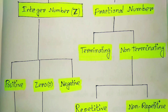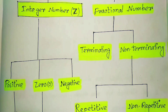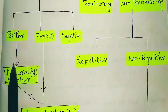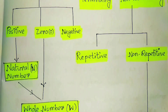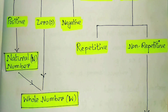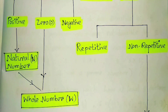In the integer number we divide it into positive, negative, and zero. If we consider only the positive numbers, these are called natural numbers. If we include zero with the positive numbers, it is called the whole number. Negative numbers are the opposite of positive numbers.